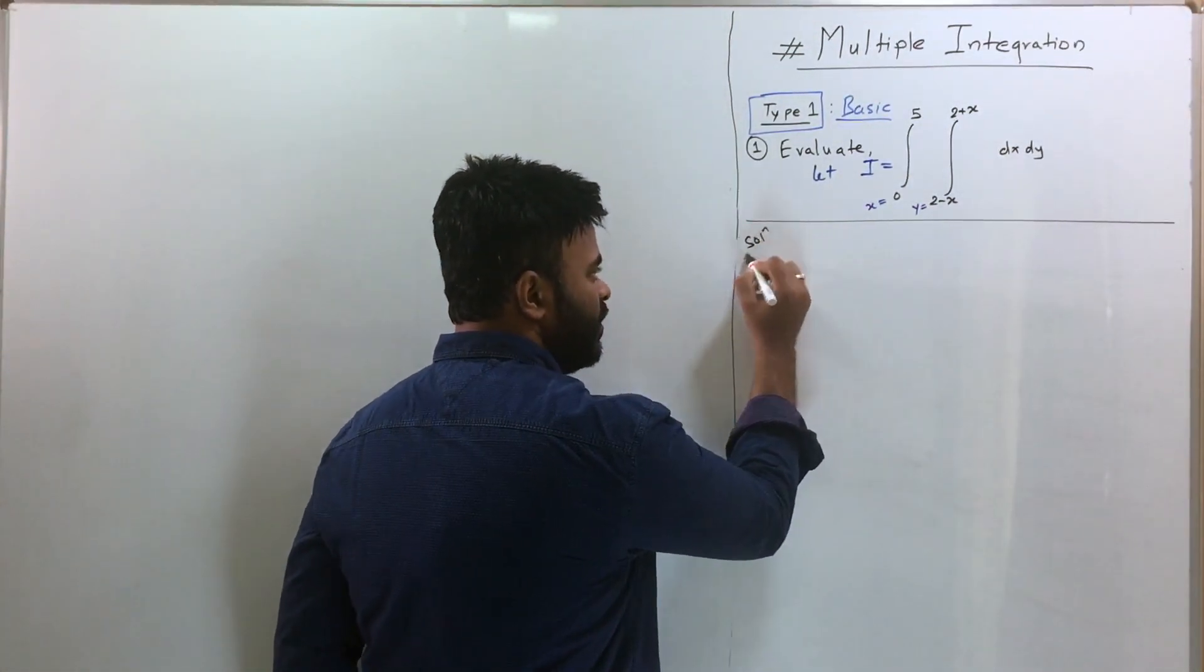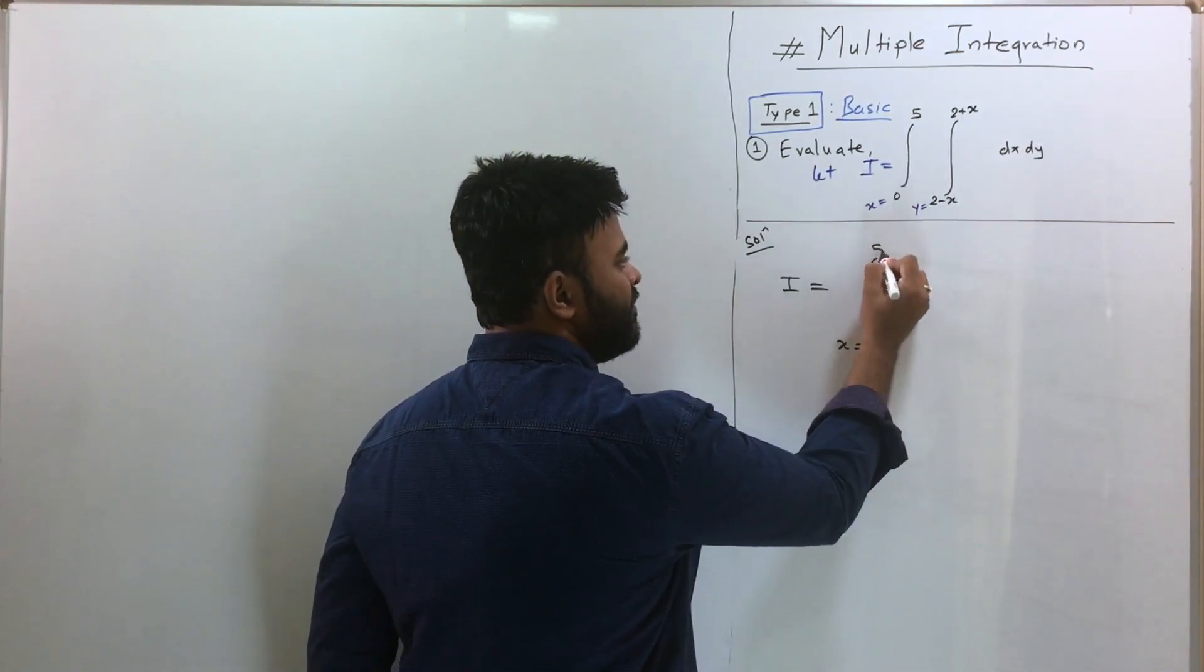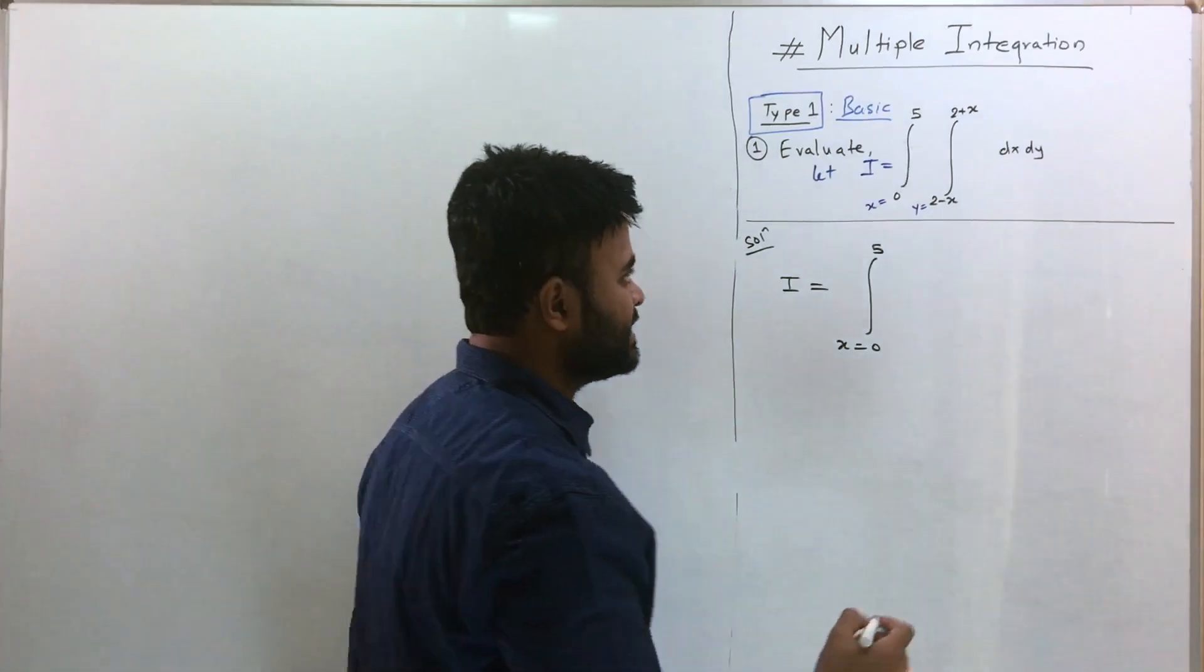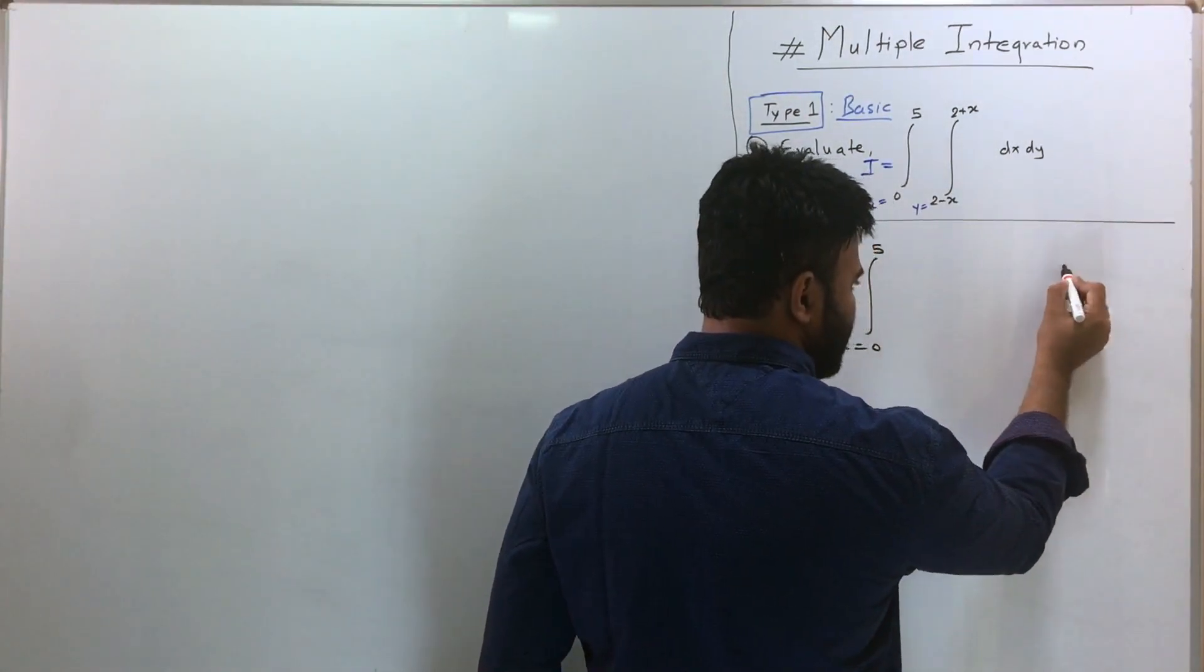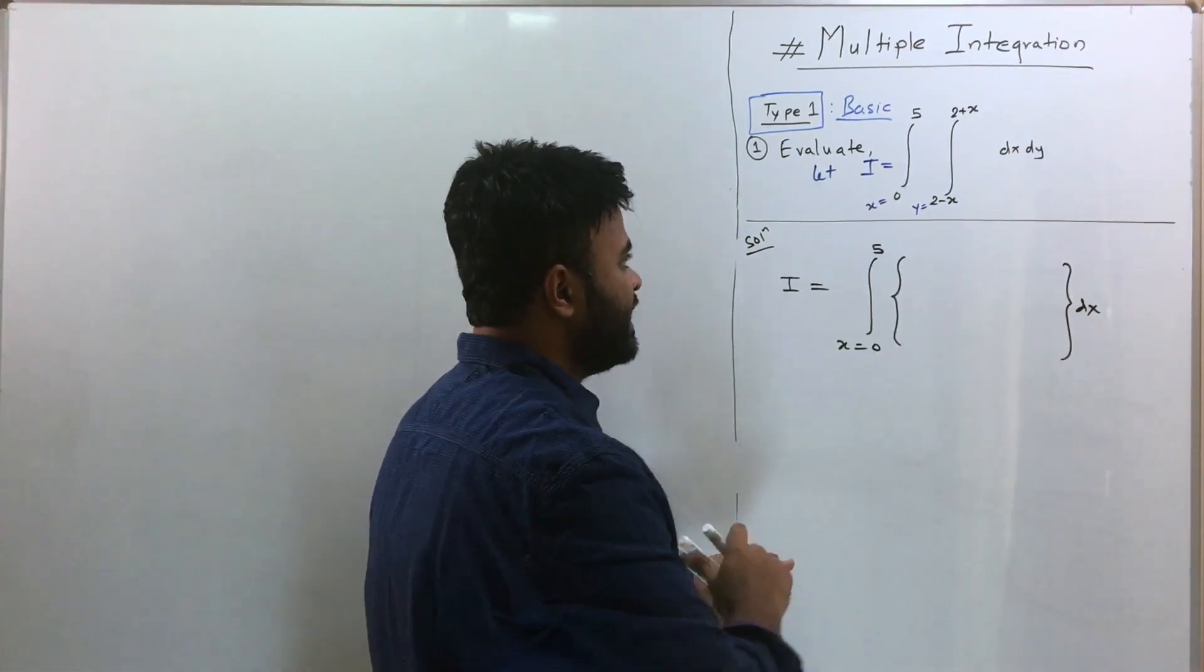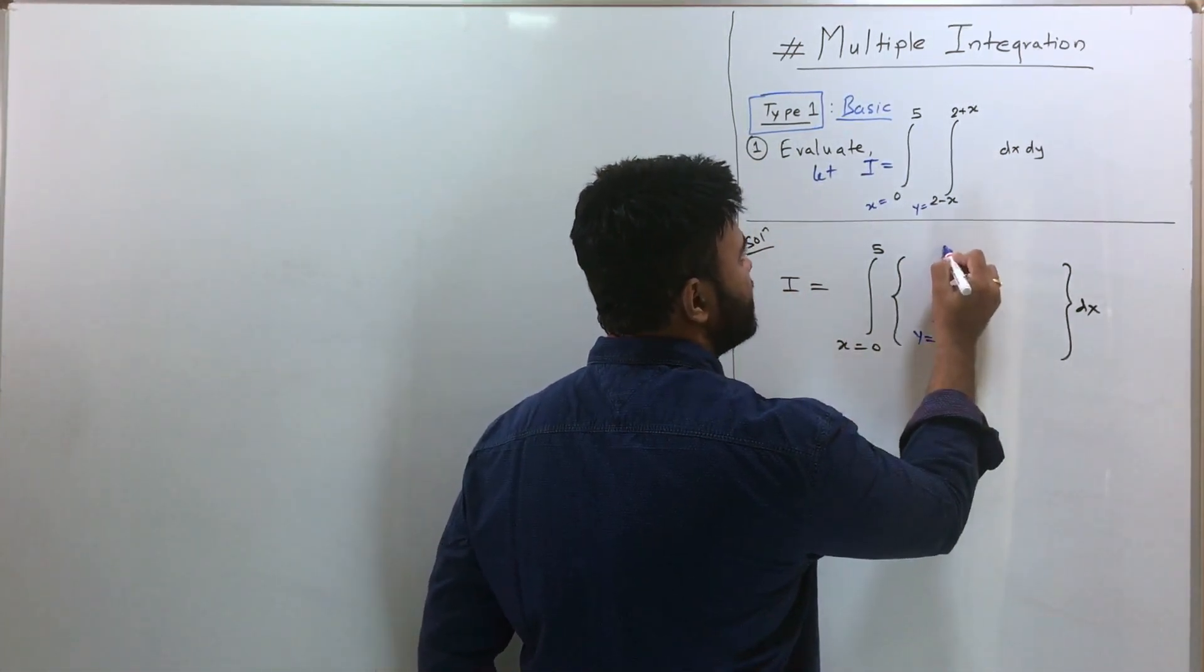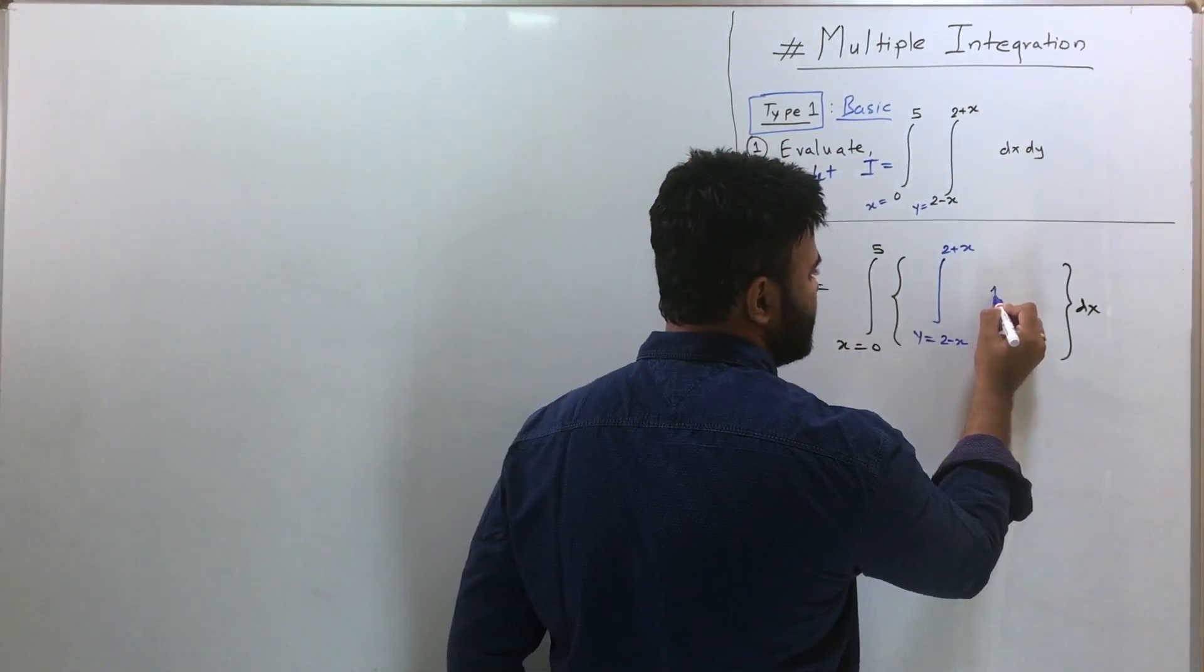So the solution will go like this: I have integral I, this is X going from 0 to 5, this is the limit of integration of X dx which I will be integrating later on. And first I'll integrate this which is Y equal to 2 minus X to 2 plus X, and this is 1 dy.